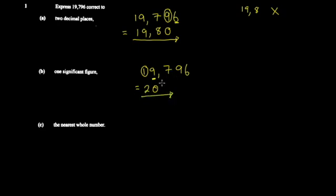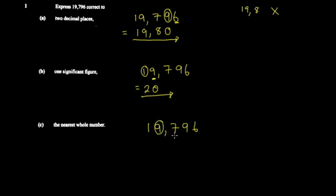Part c asks to round the same number to the nearest whole number. You write out your number and identify the units (ones) place. Then ask yourself how the digit 7 in the tenths place affects the 9 in the units place. Since 7 is greater than five, you round up.